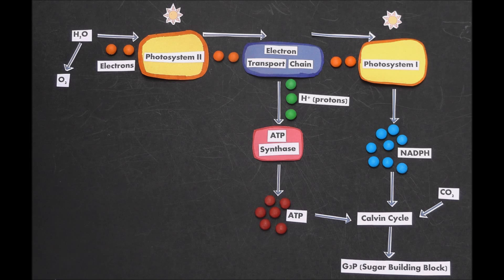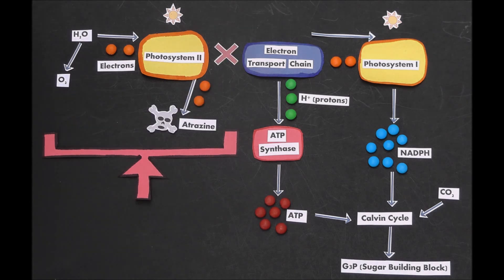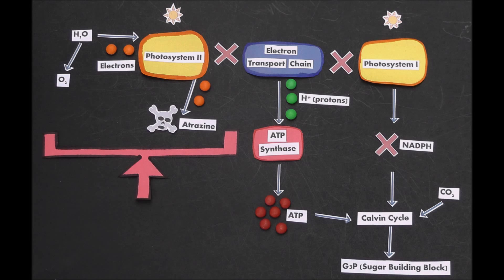So what happens with the atrazine? Let's focus on this part of the pathway. Atrazine works by stealing the electrons from photosystem II. That means photosystem II has no electrons to send to the electron transport chain. No electrons reach photosystem I, and no electrons are available to get passed on to produce NADPH.